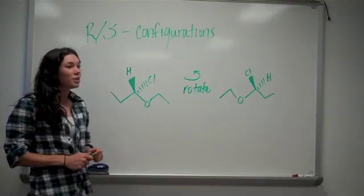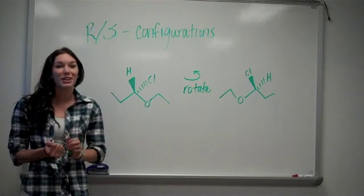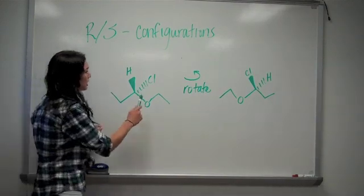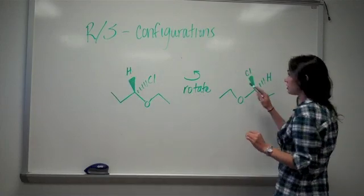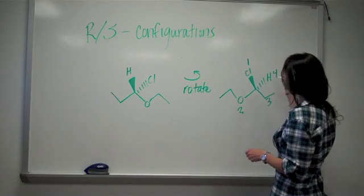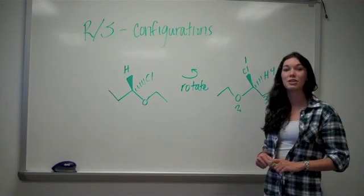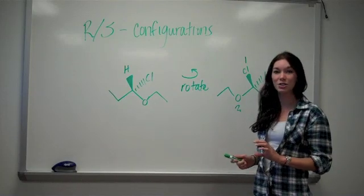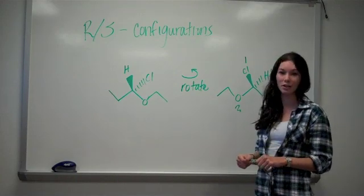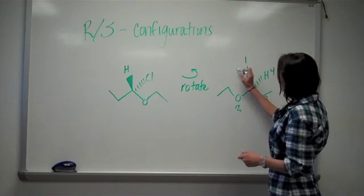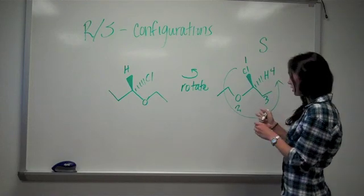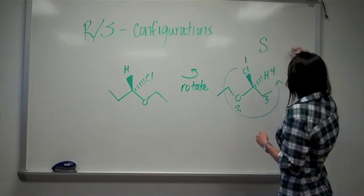After you prioritize your molecule, you're always going to want to have your lowest priority on a dash, so you're going to have to rotate the molecule. In this example, we're rotating it so that the hydrogen is now going to be on the dash versus the chlorine. So now our priorities go one, two, three, four. Now that we've established priorities and made sure that the lowest priority is on a dash, we can see whether our one, two, three sequence is clockwise or counterclockwise. In this case, our one, two, three sequence is counterclockwise, so therefore it's given an S designation. Its enantiomer would have an R designation, being clockwise.